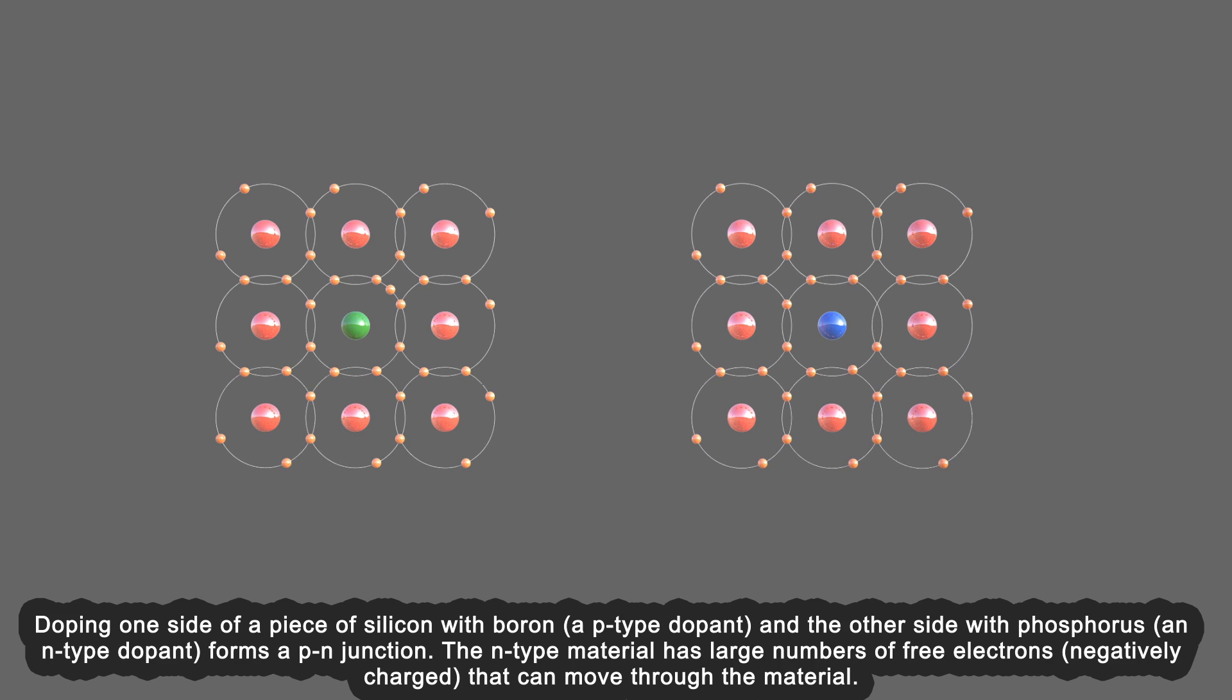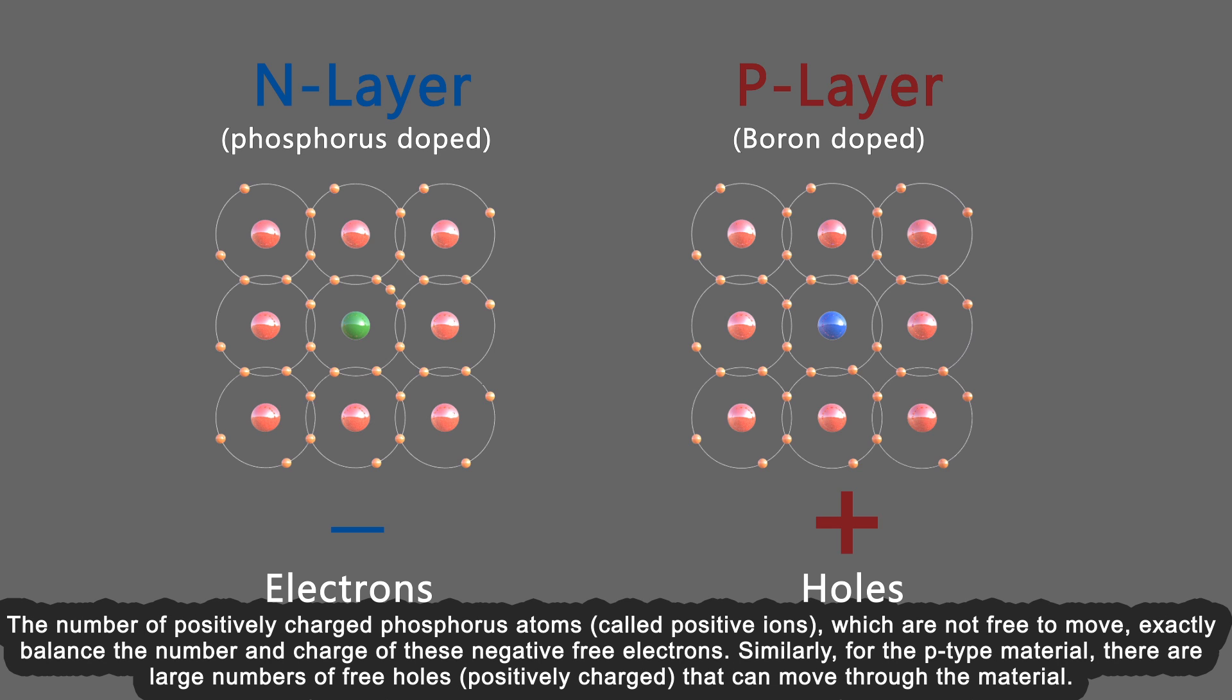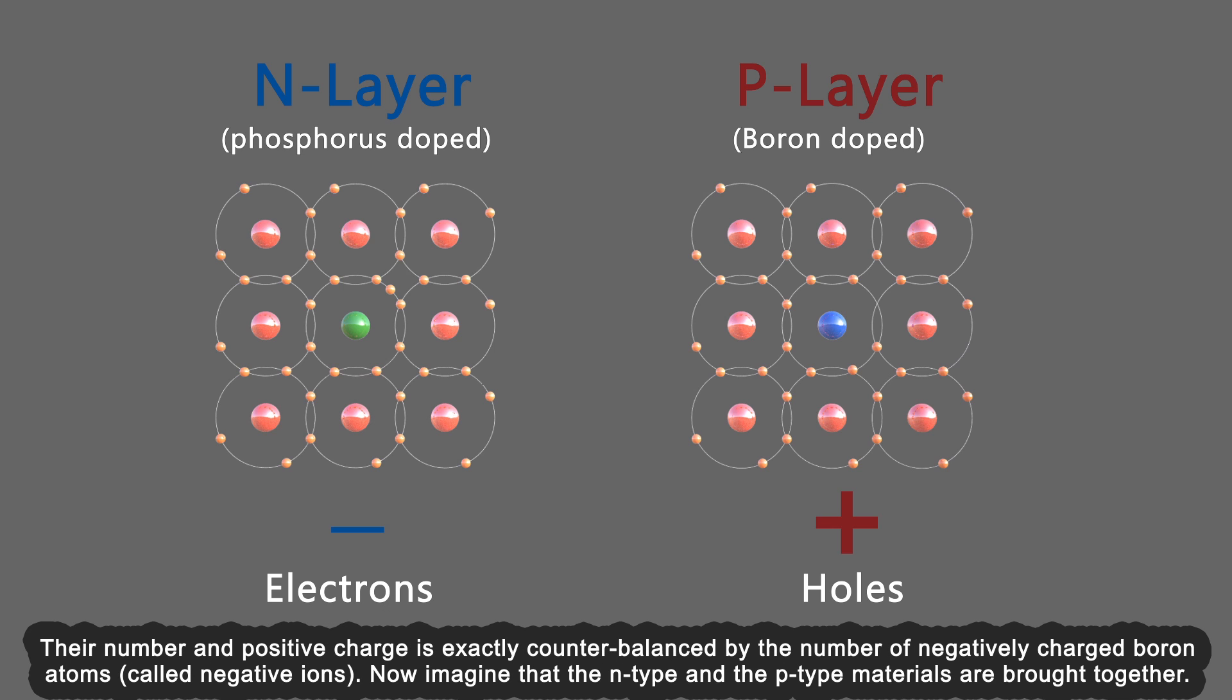Doping one side of a piece of silicon with boron, a p-type dopant, and the other side with phosphorus, an n-type dopant, forms a p-n junction. The n-type material has large numbers of free electrons, negatively charged, that can move through the material. The number of positively charged phosphorus atoms, called positive ions, which are not free to move, exactly balances the number and charge of these negative free electrons. Similarly, for the p-type material, there are large numbers of free holes, positively charged, that can move through the material. Their number and positive charge is exactly counterbalanced by the number of negatively charged boron atoms, called negative ions.